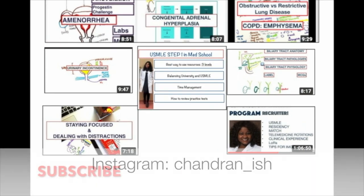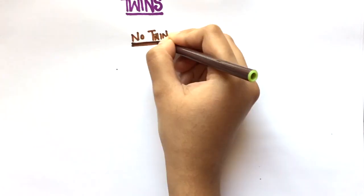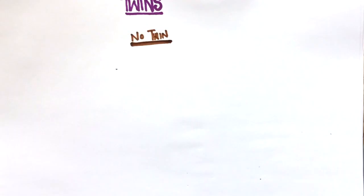In pregnancies with no twinning, one sperm combines with one egg and gives rise to a zygote. This process is known as fertilization.